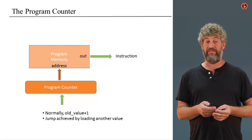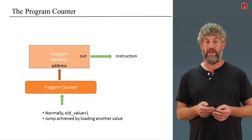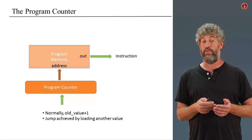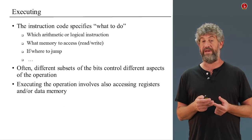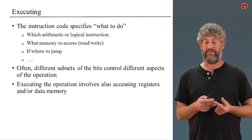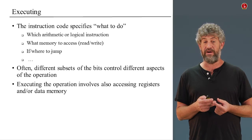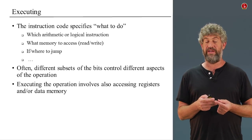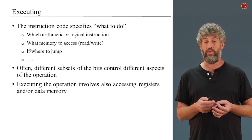Once we have the instruction code, we need to execute it. The instruction code itself has all the specifics of what we're going to do: which calculations we're supposed to perform, which registers we're touching, and whether we need to jump afterwards. All that information is coded inside the instruction we got during the fetch part of the cycle. Different bits of the instruction actually control the different parts of what needs to happen. Executing the current instruction basically means taking the bits from the instruction code that specify what to do and actually doing it.